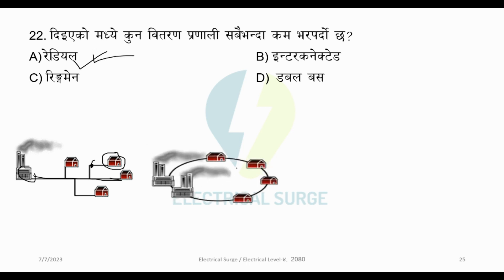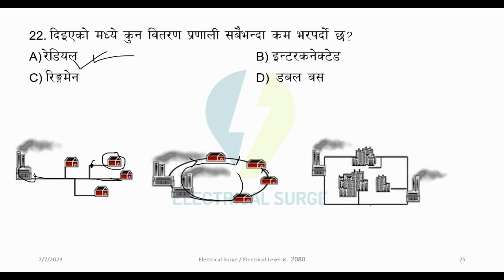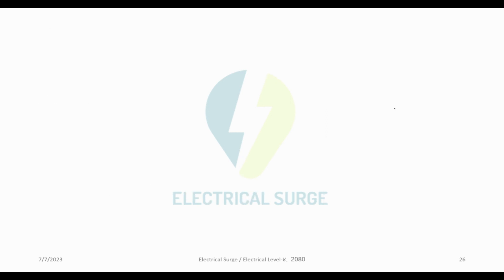A ring main or ring loop system provides better reliability. If you can supply from this system, power can come from different lines connected together, giving high reliability. It is more expensive than radial but slightly less than an interconnected system. Among these, radial has the least load bearing, so the answer is Radial.